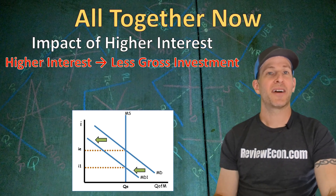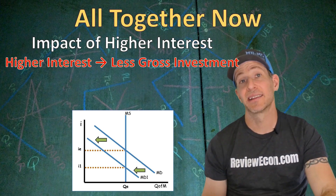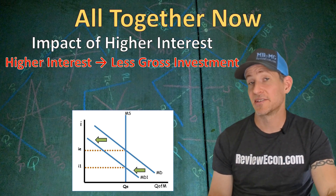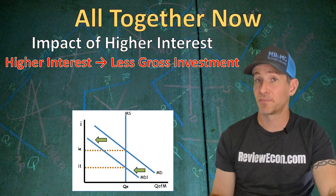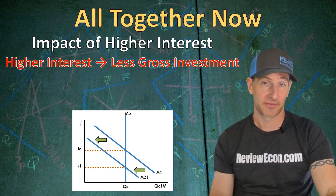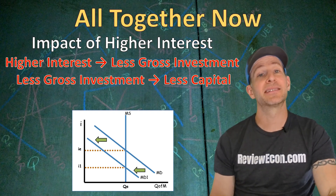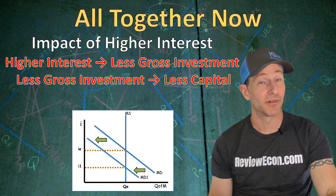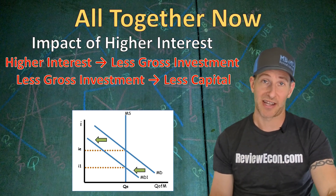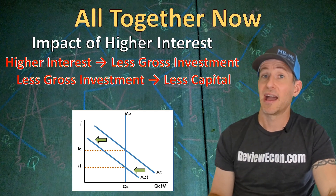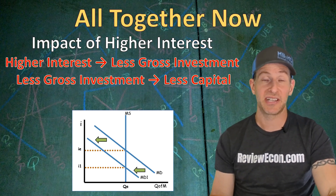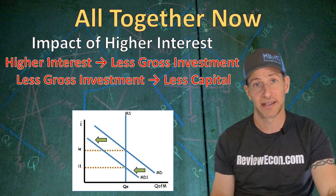If we have higher interest rates, that's going to mean less gross investment, because it will be more expensive for businesses to borrow and purchase physical capital. That lower amount of gross investment means less capital formation and slower rates of economic growth, and the LRAS and PPC shift outward more slowly.